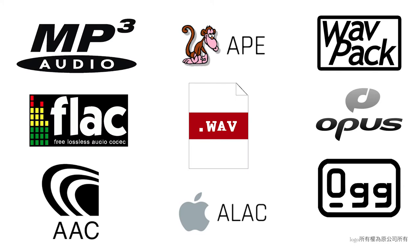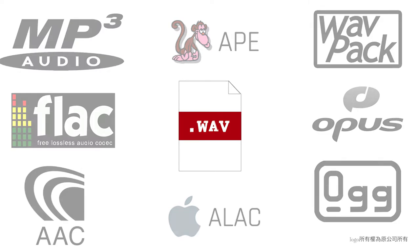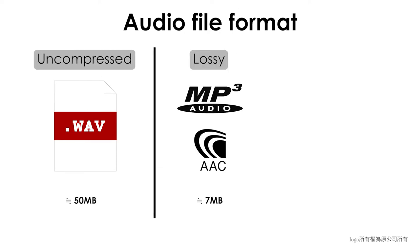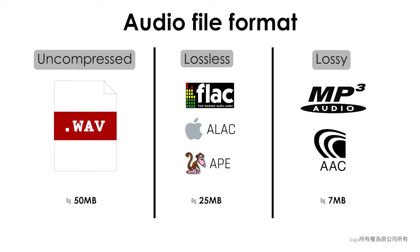Music files are digital information and the format of the files is very important. CD is composed of WAV files, not compressed, with good music quality. However, music files are compressed for easy storage in mobile devices. Lossy compression, e.g. MP3 and AAC files, reduces the file size significantly but also sacrifices many sound details. Lossless compression formats such as FLAC, APE, and ALAC will not cause data loss, and you can hear the full performance of the music.